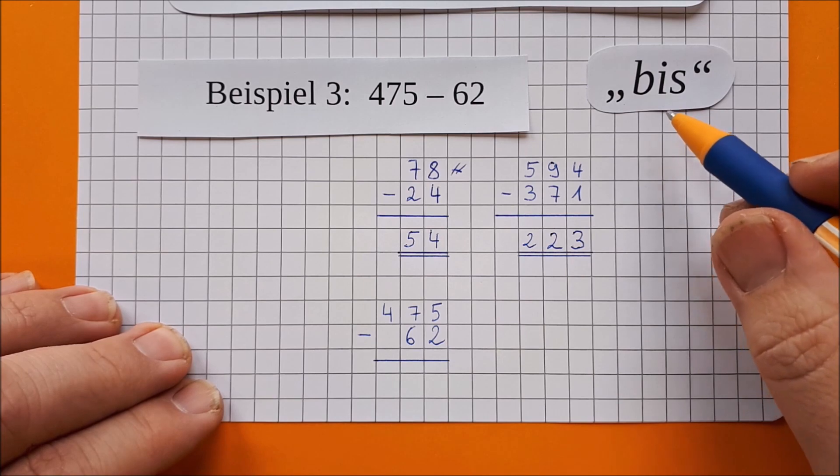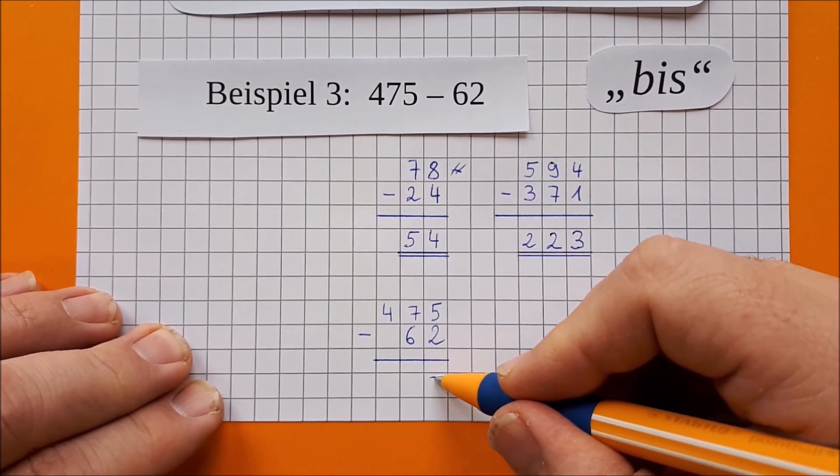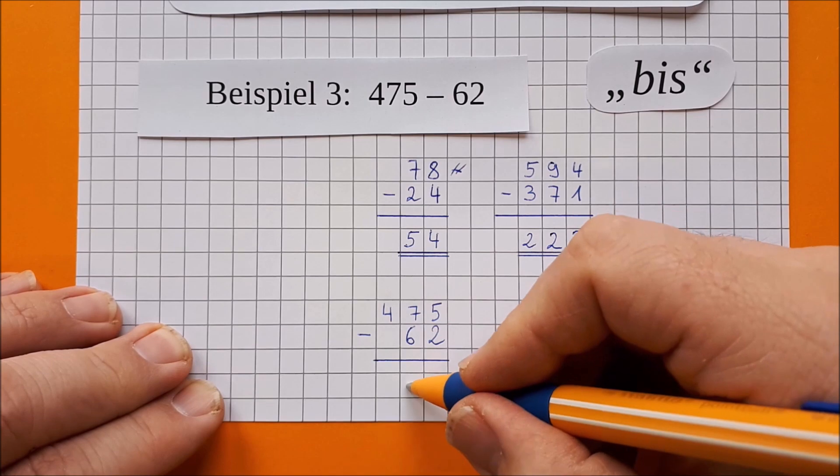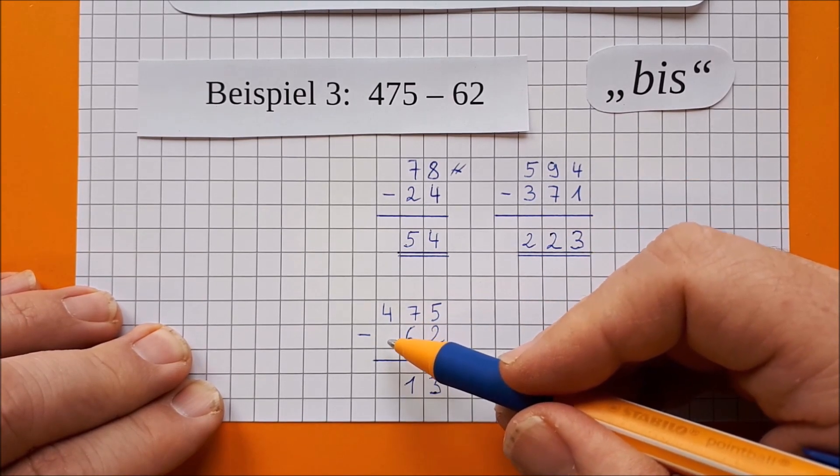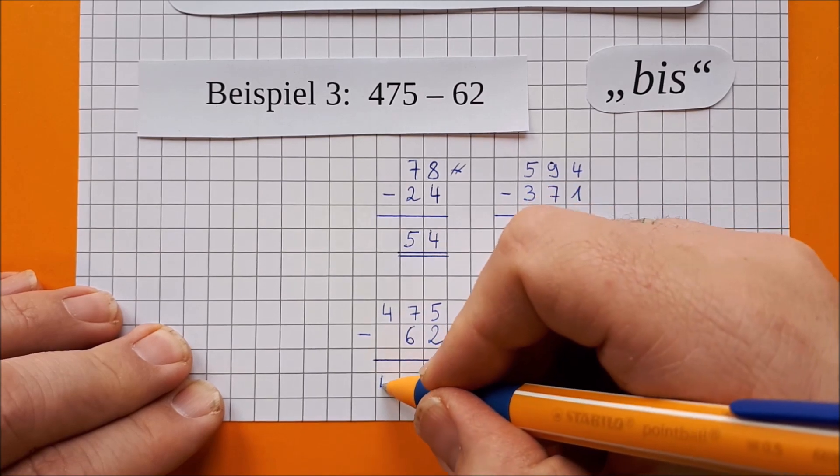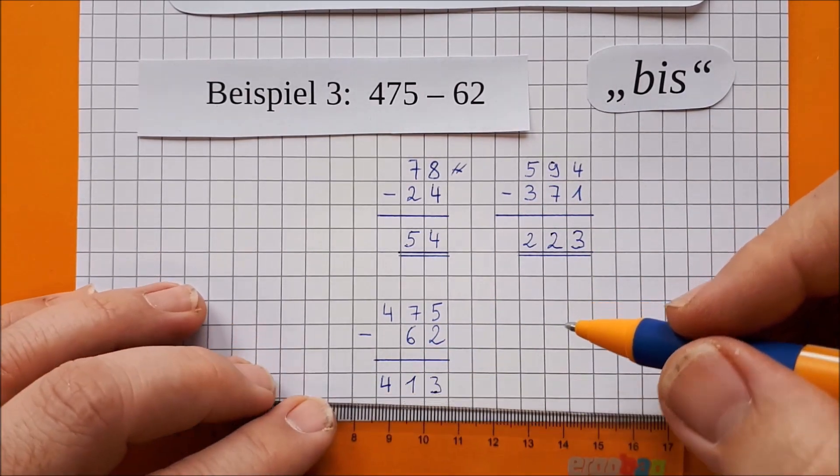Jetzt ist das Zauberwort wieder bis. 2 bis 5 sind 3. 6 bis 7, oh, das ist besonders schwer, ist einer. Und hier steht keine Zahl, also nehmen wir eine 0 an. 0 bis 4 sind 4. Und das unterstreichen wir wieder doppelt.